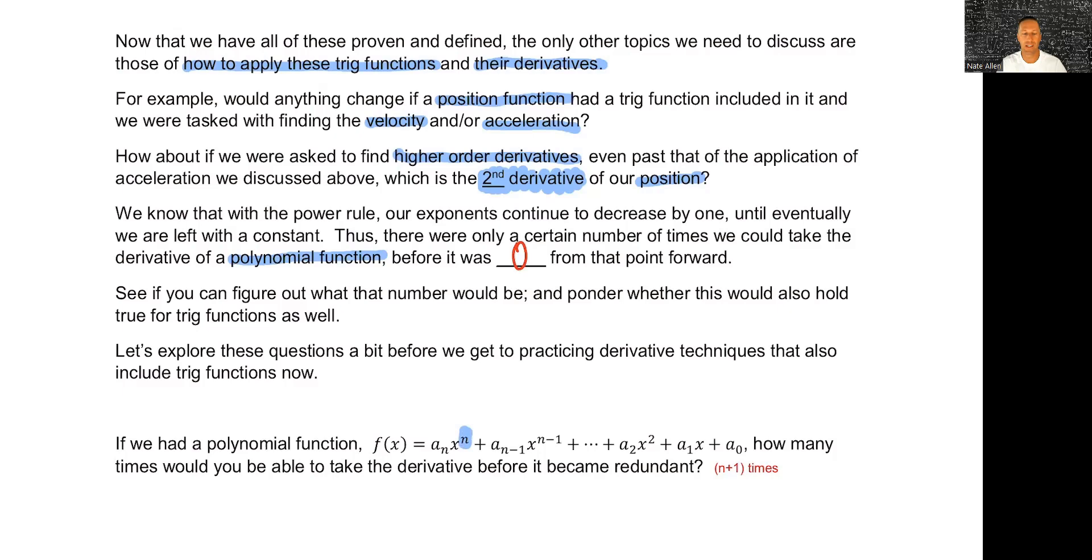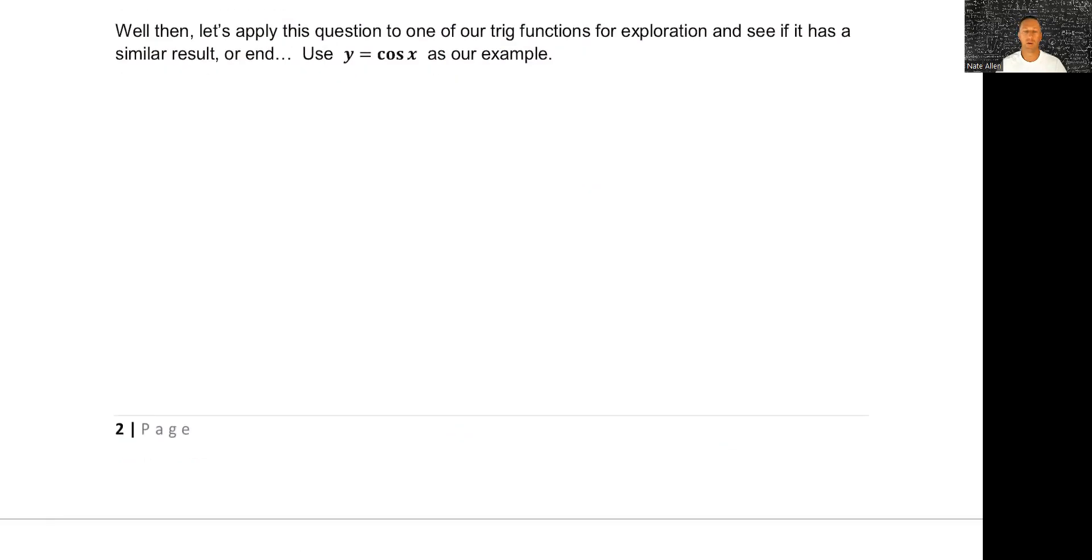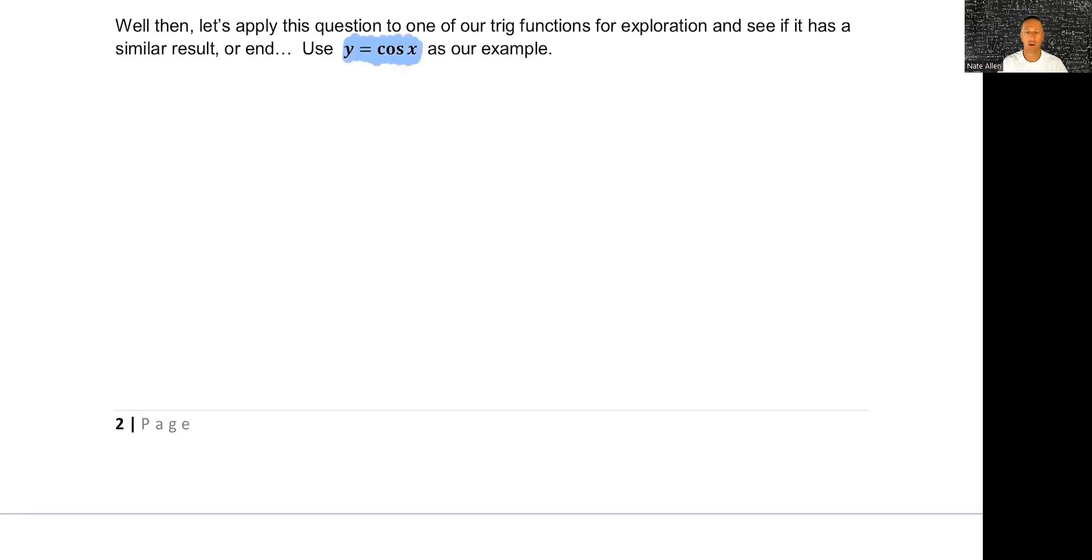How would that work with trig functions? Would it be the same where we can only take the derivative so many times? Let's start with the polynomial function and see if we can figure that out. How many times would we be able to take the derivative? We knew it would be n+1 times. Well then, would we be able to do the same thing with a trig function, let's say cosine of x? Try to take the derivative of this as many times as you can and see if you find a pattern or an end such as a zero.